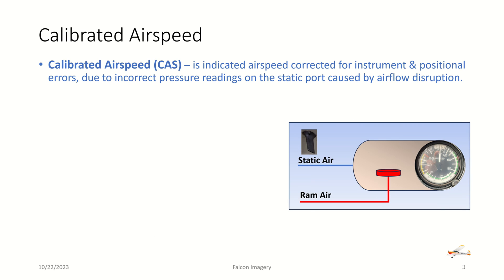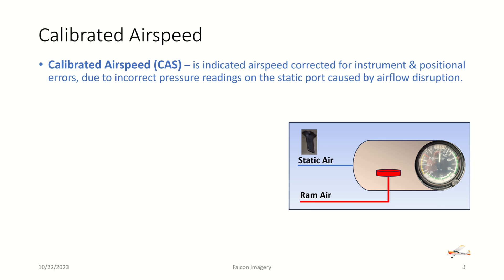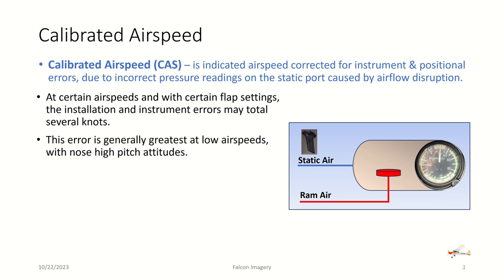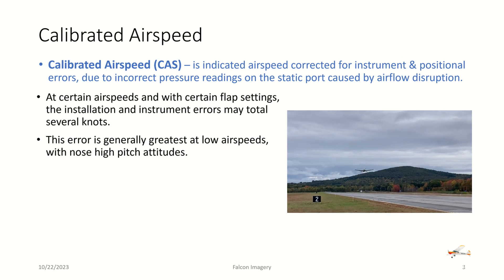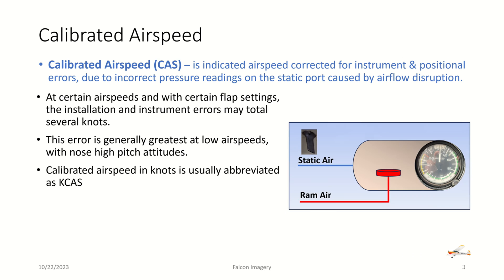Next, we have calibrated airspeed. Calibrated airspeed is indicated airspeed corrected for instrument and positional errors due to incorrect pressure readings on the static port caused by airflow disruption. At certain airspeeds and with certain flap settings, the installation and instrument errors may total several knots. This error is generally greatest at low airspeeds with nose-high pitch attitudes like on a climb out.